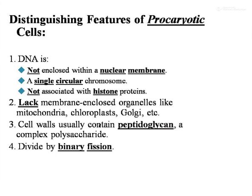In prokaryotic cells, the DNA is not enclosed within a nuclear membrane — the nuclear membrane is not well developed. A single circular chromosome is present and it is not associated with histone proteins. Prokaryotic cells lack membrane-bound organelles like mitochondria, chloroplasts, or Golgi complex. The cell wall usually contains peptidoglycan, a complex polysaccharide, and the cell divides by binary fission. The ideal example of a prokaryotic cell is bacteria.